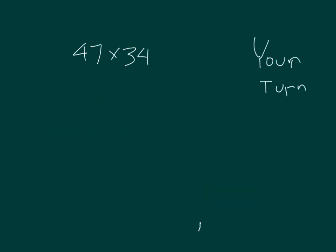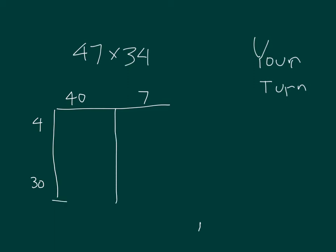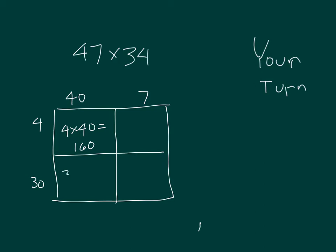Now let's show the area model and the standard algorithm for 47 times 34. We get: 4 times 40 is 160, and 30 times 40 is 1,200.